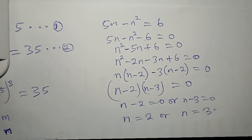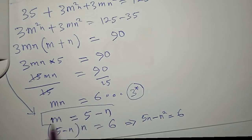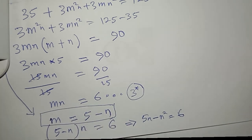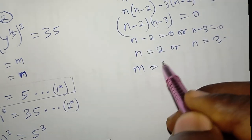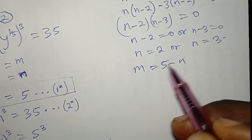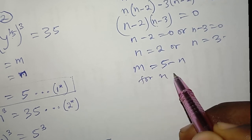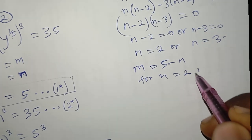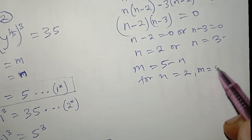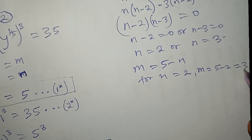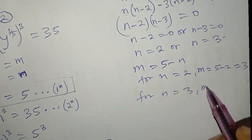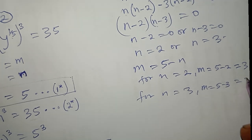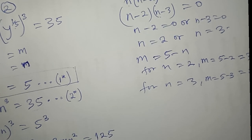Having found n, I substitute back into m = 5 − n. For n = 2: m = 5 − 2 = 3. For n = 3: m = 5 − 3 = 2.